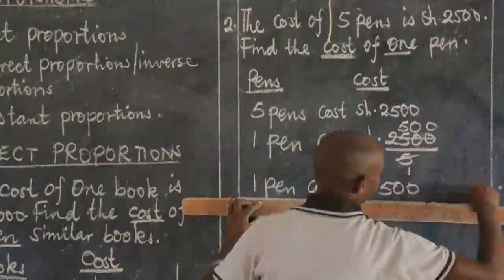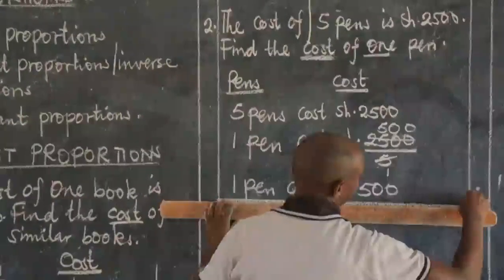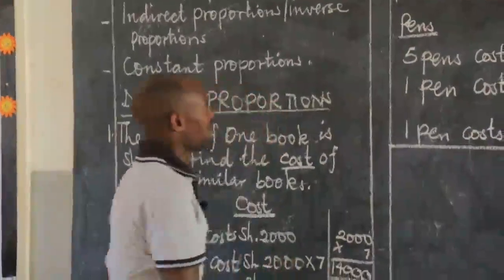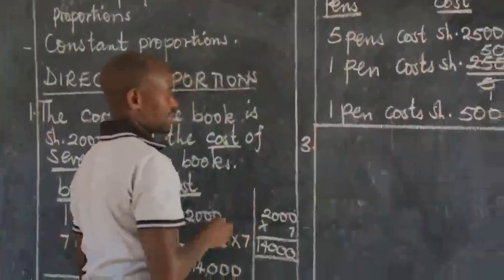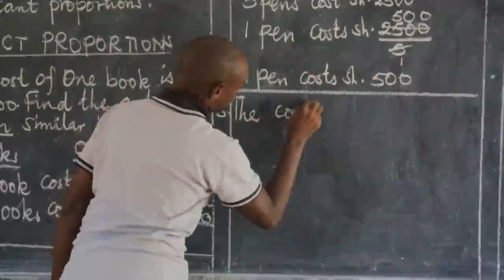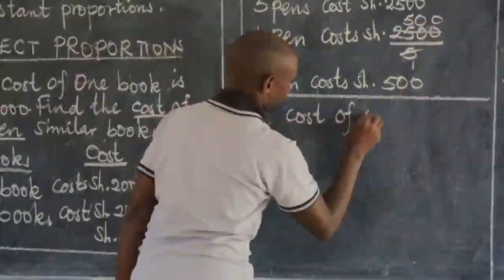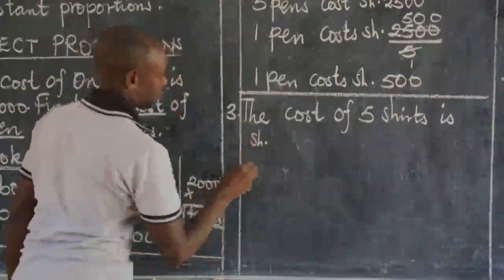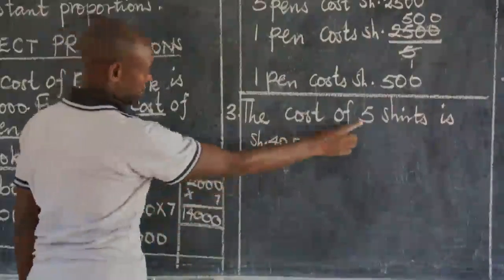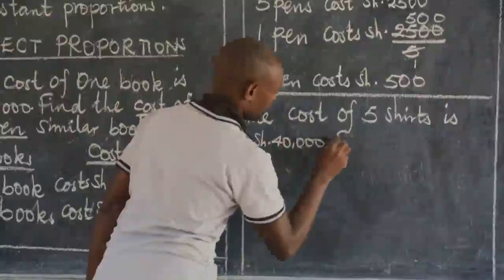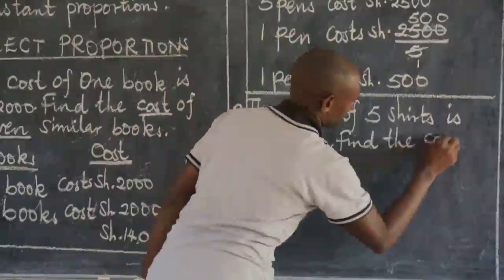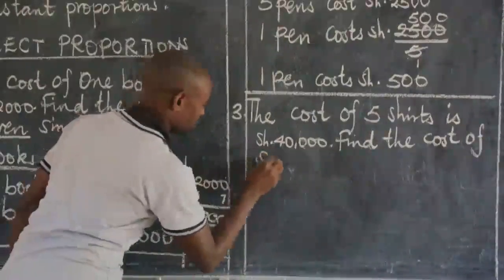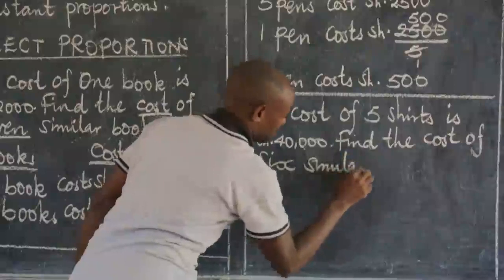This is what you looked at in your previous classes. So in P6, I am going to make it a little bit harder because you are now older and can interpret more. In our example number three: the cost of five shirts is 40,000 shillings. Find the cost of six similar shirts.